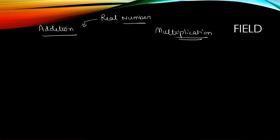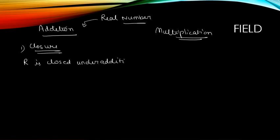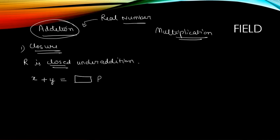When we talk about addition, we have the closure property. The set of real numbers R is closed under addition. When you apply addition between two real numbers x and y, the result is also a unique real number — meaning the result belongs to the set of real numbers. For example, 2 plus 3 — both are real and the result is also a real number. So it follows the closure property.